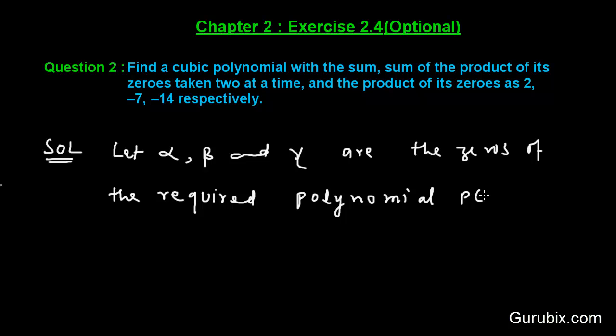We shall denote the required polynomial p(x). Therefore p(x), we let, is ax³ + bx² + cx + d. This is the standard form of a cubic polynomial.